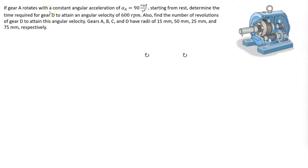If gear A rotates with a constant angular acceleration of alpha sub A equal to 90 radians per second squared, starting from rest, determine the time required for gear D to attain an angular velocity of 600 RPM. Also, find the number of revolutions of gear D to attain this angular velocity. Gears A, B, C, and D have radii of 15mm, 50mm, 25mm, and 75mm, respectively.